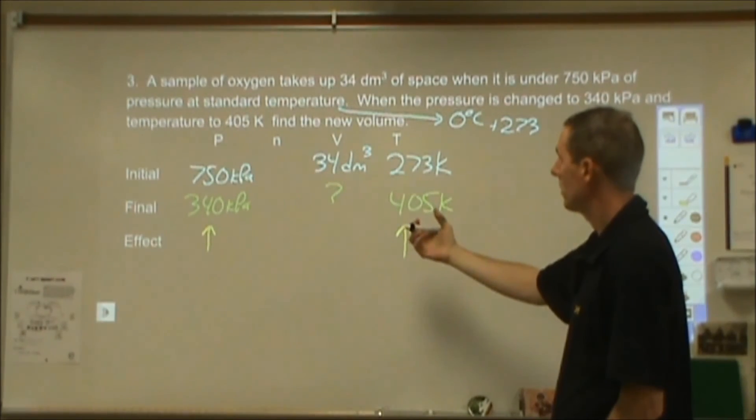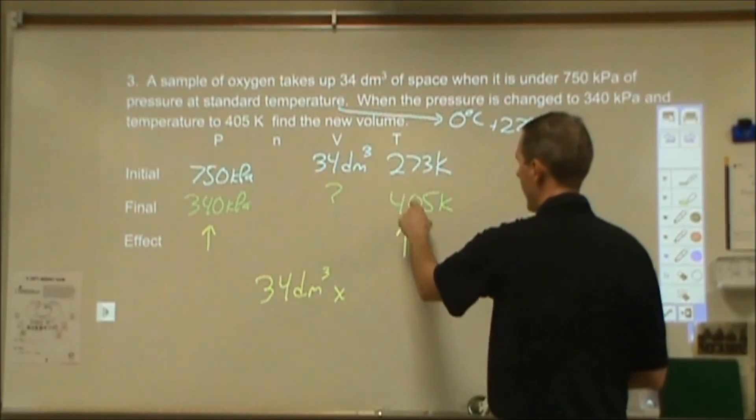So if the volume goes up, pressure will go down. Yep. So we're set. So we're going to start with our 34 decimeters cubed. We're going to multiply by a factor of these two numbers that makes it go up. So we're going to put 405 on top. We're going to put 273 on the bottom. And then this one is also going to make it go up. So we're going to have to put the bigger number on top, 750 kilopascals over 340 kilopascals. So I'm going to take 34 times this ratio times this ratio. And that comes out to be 111.26. So it looks like I'm going to round that to 110 decimeters cubed.